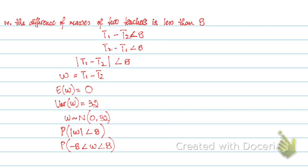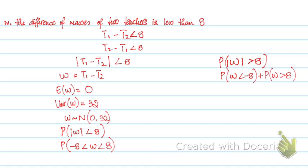So this is the probability you need to calculate. Just in case, if this was the probability of modulus of W greater than 8, that would have been the probability of W less than minus 8 plus the probability of W greater than 8 — the range is broken into 2. But since this is modulus of W less than 8, we calculate the probability from minus 8 to 8.